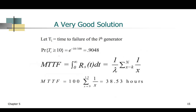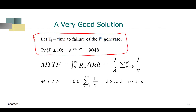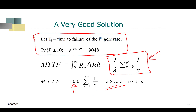To compute the mean time to failure, we use the formula shown previously. Lambda is 1 over 100, so 1 over lambda is 100, which appears in the formula. With x ranging from 9 to 12, working through the math gives a mean time to failure of 38.5 hours — so on average, the system fails every 38 and a half hours.